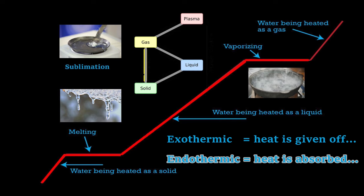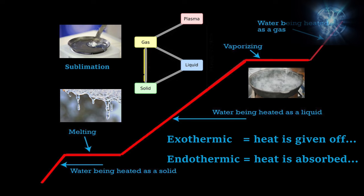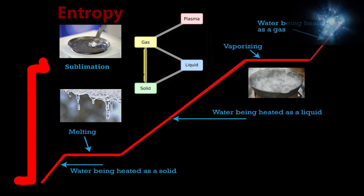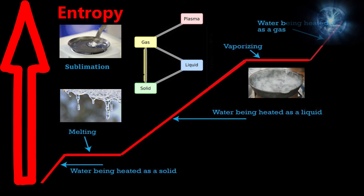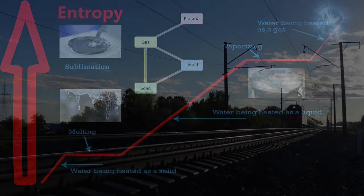If a gas is heated to the point that particle collisions knock some of the electrons off, the material becomes a plasma — the fourth state of matter. The entropy or randomness of the system increases as matter phase shifts from solid to liquid to gas to plasma. When everything is added up in any closed system, entropy must increase for work to be done. Understanding the flow of heat energy was critical to developing the engines that power our society today.